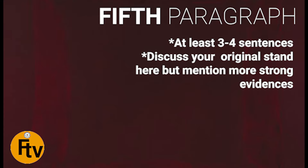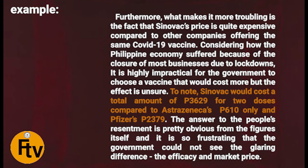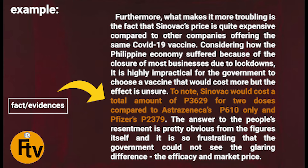So, this is the suggested format for the fifth paragraph — three to four sentences pa rin. In this paragraph, you are now going to discuss your original stand. Diba bumalik na tayo? We have reverted already to our original stand. But here, you need to mention more strong evidences para mas masuportahan mo pa or mas mapalakas mo pa ang iyong opinion tungkol sa pinag-uusapan. Here is the example — using a transitional device, "furthermore," ay sinuportahan ng writer ang kanyang stand para dito sa fifth paragraph, kung saan ay nagpaliwanag siya kung bakit ganoon yung kanyang stand. Then sa gitna nito ay naglagay siya ng kanyang fact or evidence. So, kailangan laging meron kang evidences para ito ang nagpapalakas sa iyong article.